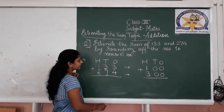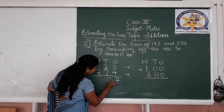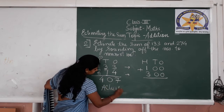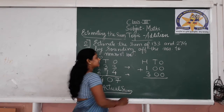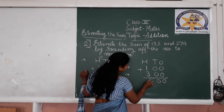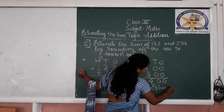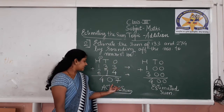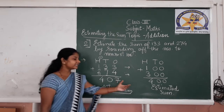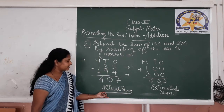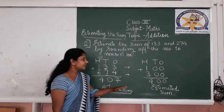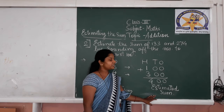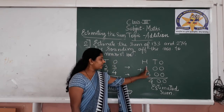Now we are going to find both sums. Let us find the actual sum of 133 and 274: 3 plus 4 is 7, 3 plus 7 is 10 (carry 1), 1 plus 2 plus 1 is 4. So the actual sum is 407. The estimated sum is 100 plus 300, which is 400. We can see that 407 and 400 are very close to one another. So 407 is the actual sum and 400 is the estimated sum. The estimated sum is the result of adding the rounded-off numbers.